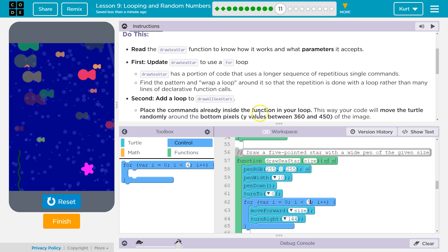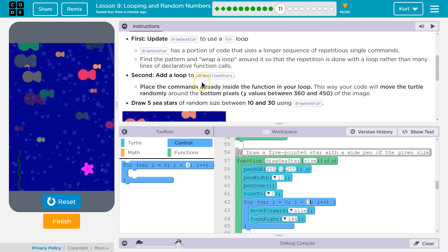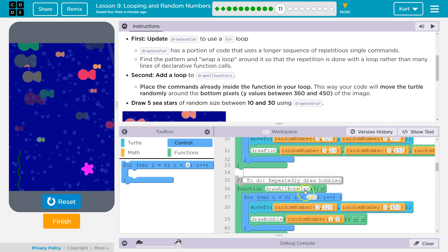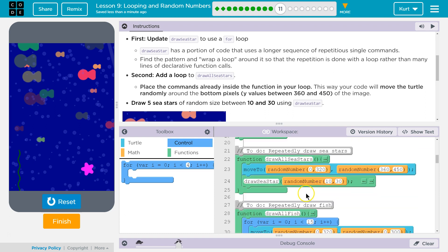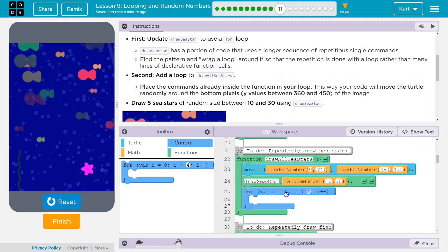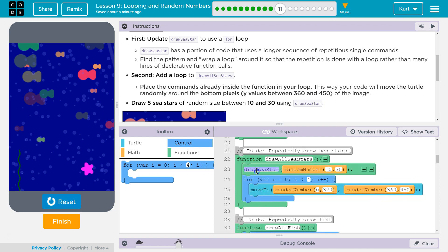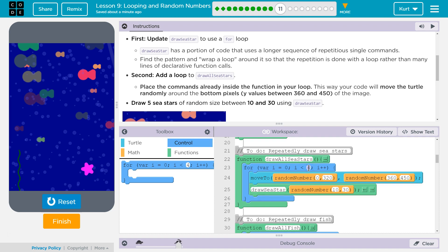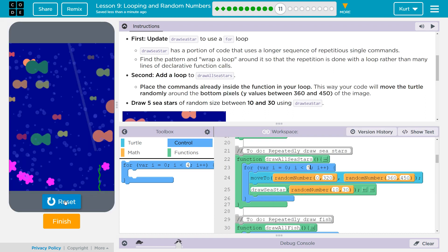So, we got that part. Second, add a loop to draw all stars to place the commands already inside. This way, your code will move the turtle randomly around the bottom pixels of the image. Draw five C-stars. So, now we're going to use a loop to repeat the, asking the computer to draw the C-stars. Put that in there. We're going to move this down here. And now, draw five C-stars. Five. And it's already set to be randomly between 10 and 30, so now our code is going to loop around and draw five of these. Ta-da! Pretty.